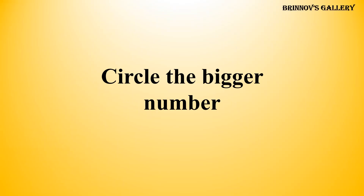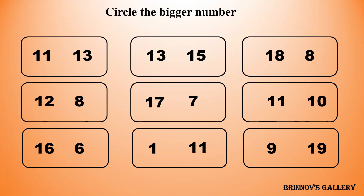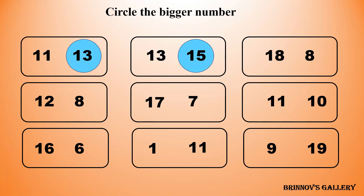Circle the bigger number. 11 and 13 — 13 is bigger than 11. 13 and 15 — 15 is bigger than 13. 18 and 8 — 18 is bigger than 8. 12 and 8 — 12 is bigger than 8.